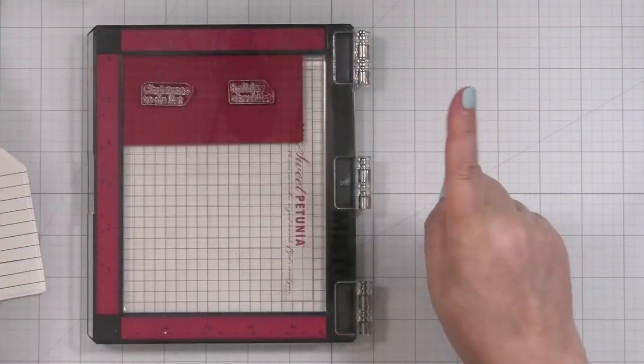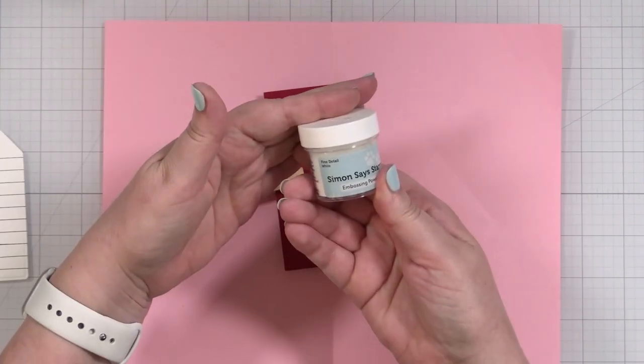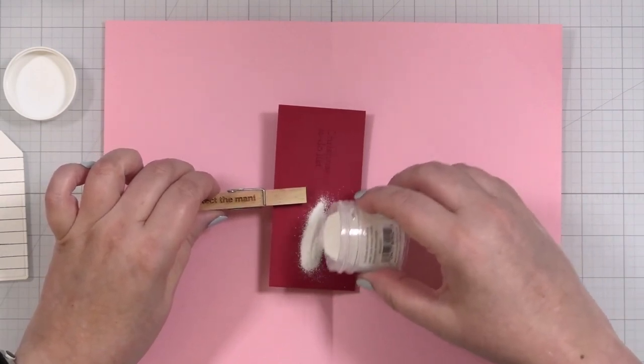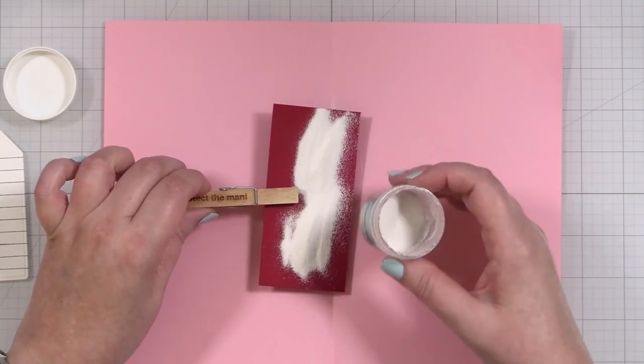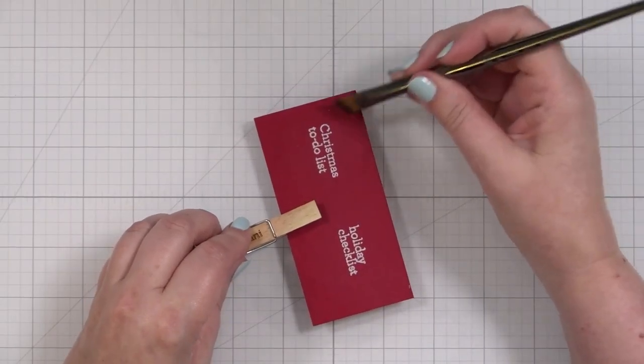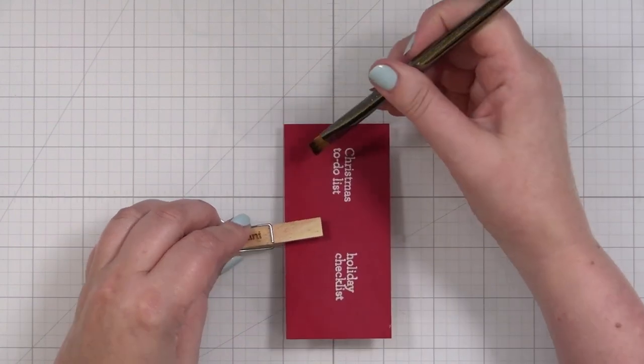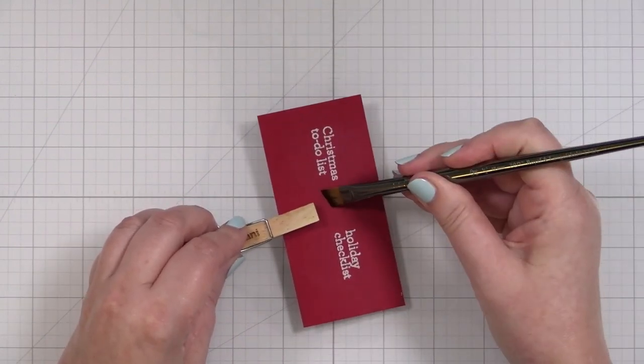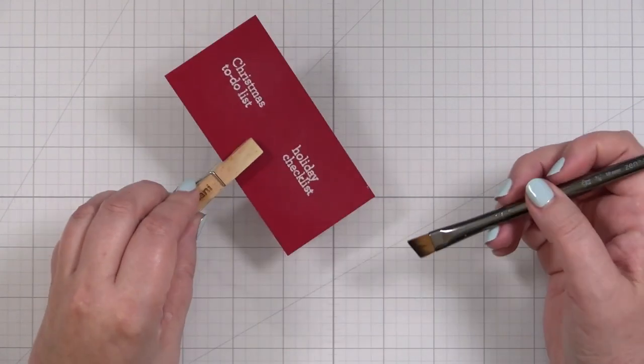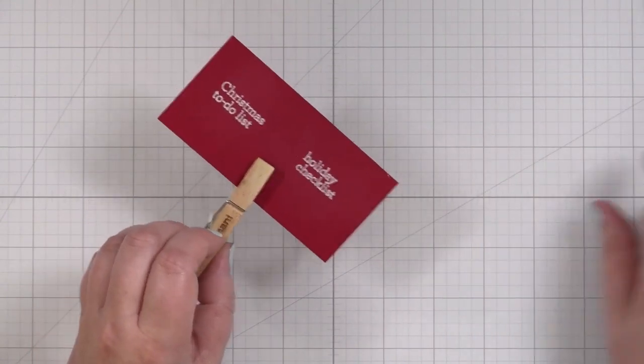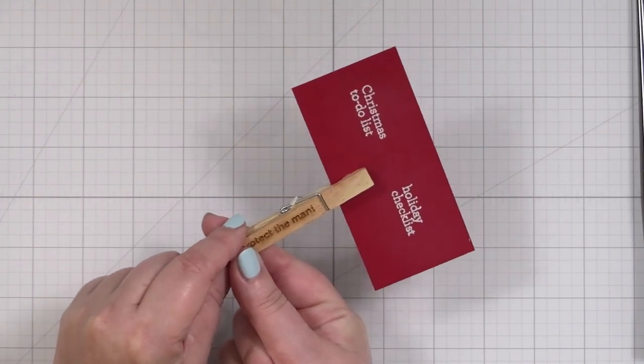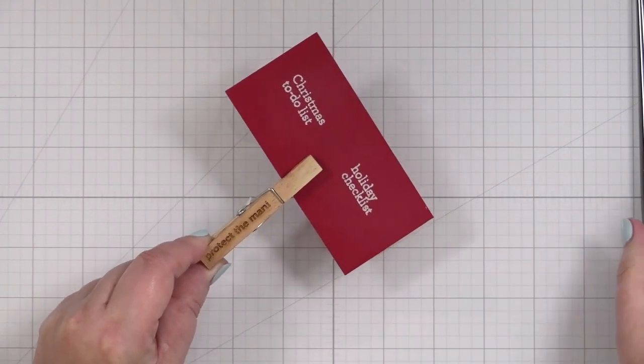Let me get my white embossing powder. I'm going to use some Simon Says Stamp Fine Detail White Powder. Sprinkle here, sprinkle here, let that just sit for a second, and tap off. If there's any powder that I want to brush away, I can just use one of my angled shader brushes, which are very nice for cleaning up any powder that may have stuck. Now I'll get my heat tool warmed up using my Protect the Manny clothespin to keep my fingers safe, and we'll melt the powder.